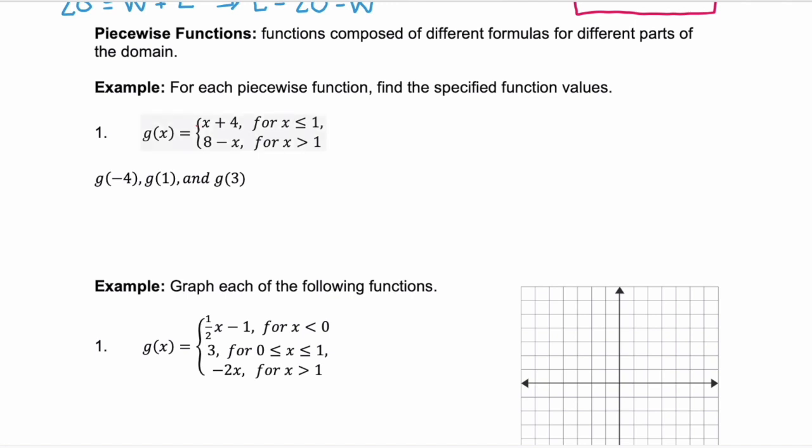For the first example, we're given a piecewise function g of x and we're asked to evaluate it for three different values. The first one, g of negative 4. We're looking for an x value of negative 4. So you need to look at the domain and figure out where negative 4 falls. Which piece? And negative 4 falls into this first piece. So we can calculate g of negative 4 with negative 4 plus 4 or that equals 0.